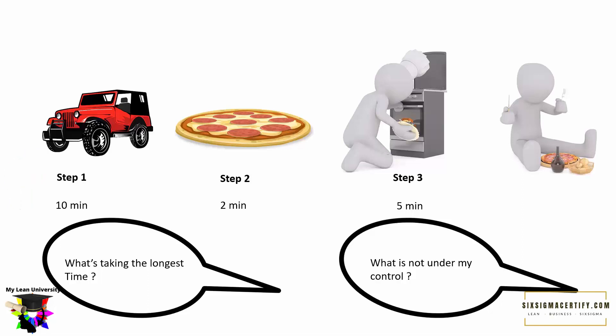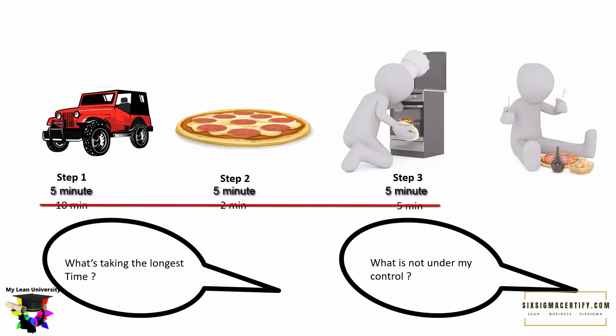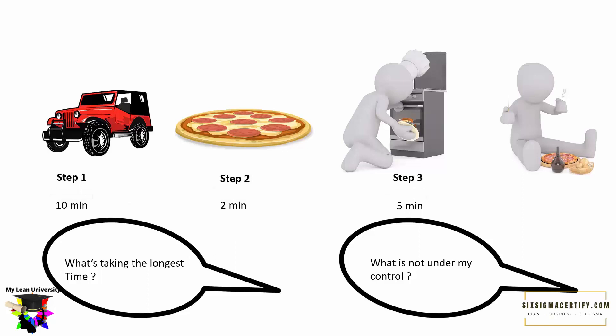Now suppose all three steps take a similar amount of time — say five minutes each. Then we should consider what is not under our control. Going to buy ingredients is under your control, and assembling the pizza is also in your control, but step three — baking — may not be in your control, because it depends on the capacity of the machine itself and you cannot take out the pizza until it is ready. So step three is not under our control.